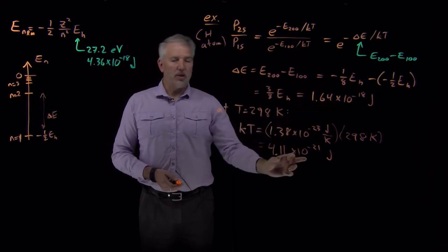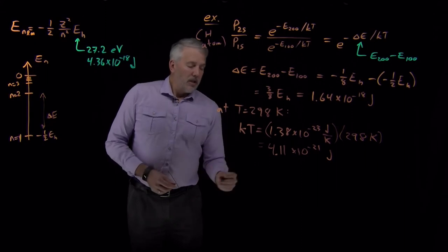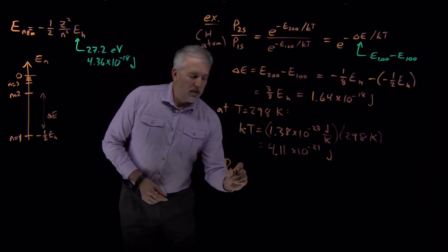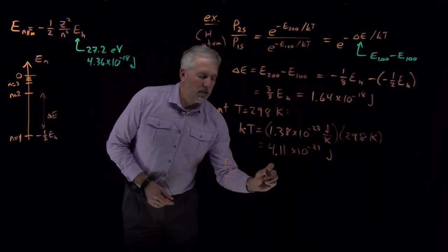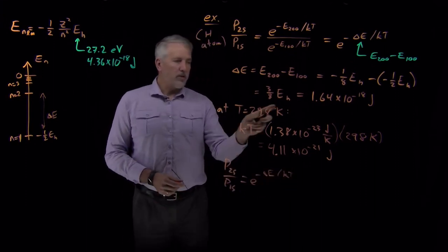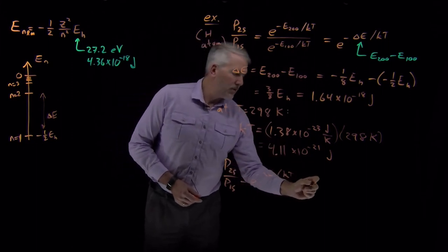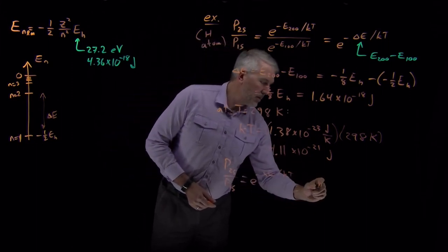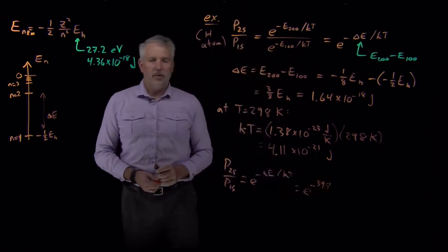So that ratio, when we calculate the ratio of delta E over kT, that ratio is 397.